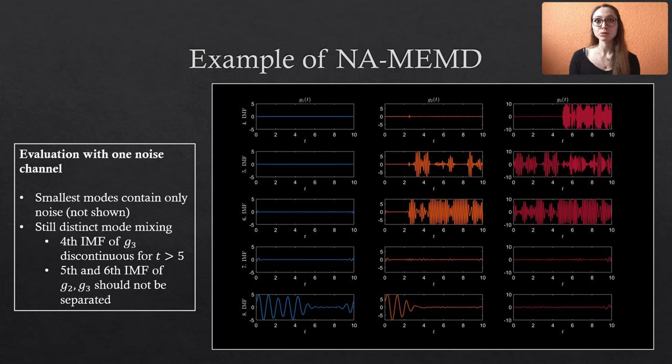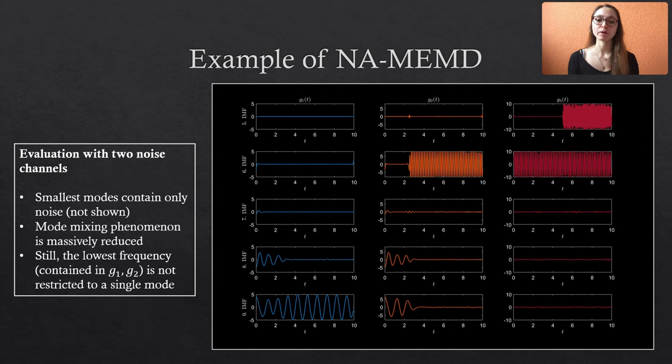However, if we use two noise channels, we observe a massive improvement of the mode assignment. While the lowest frequency that is contained in the blue and the orange data is still split into two modes, IMFs 8 and 9, the lower frequencies contained in the orange and the red data are accurately captured into individual IMFs. And due to the mode alignment property of the multivariate EMD, we can directly see that the orange and the red data contain the same frequency, which is captured in the sixth IMF.